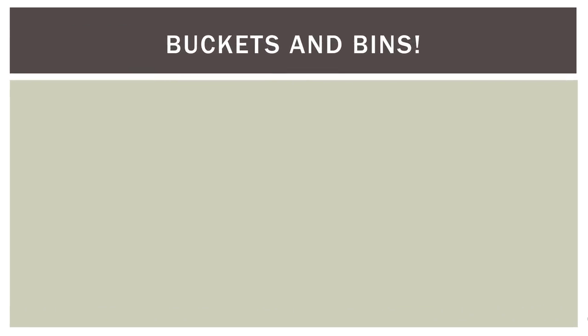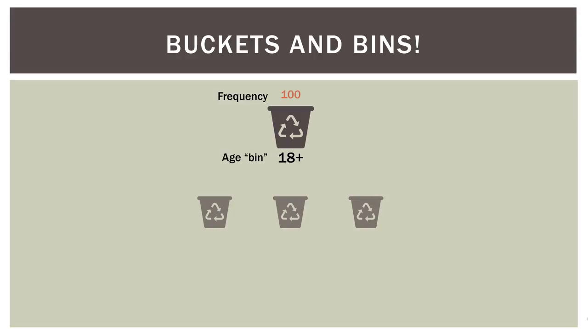Let's talk about buckets and bins. Let's say we have a bucket or a bin, and in this bucket we're going to put everyone in our data set who is age 18 or older. We have 100 people in our sample, so all 100 people go into this bucket. Now we can split it up into smaller buckets — everyone that's 18 to 39 years of age goes in the first bucket, everyone that's 40 to 59 goes in the middle bucket, and everyone that's 60 or older goes in the third bucket.